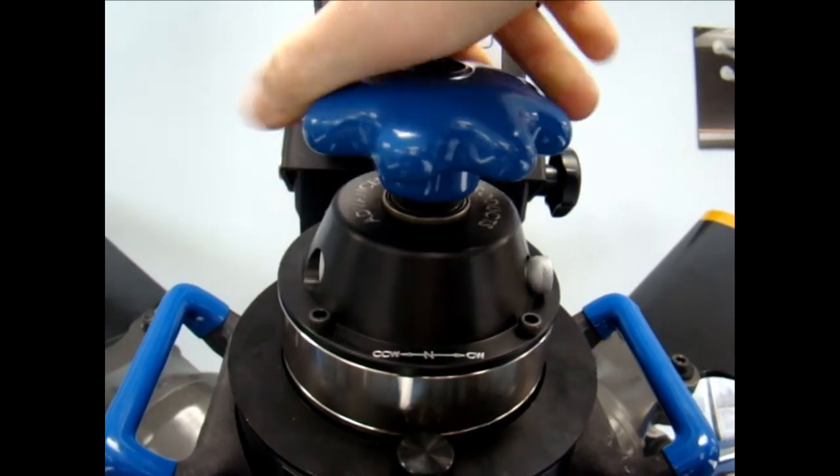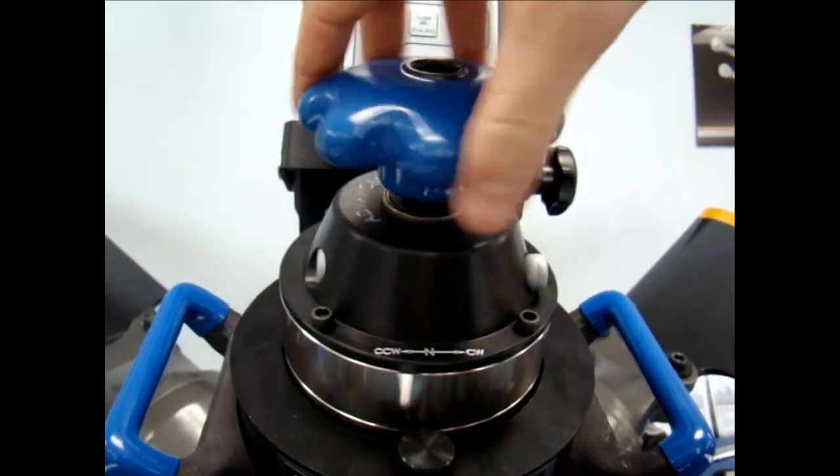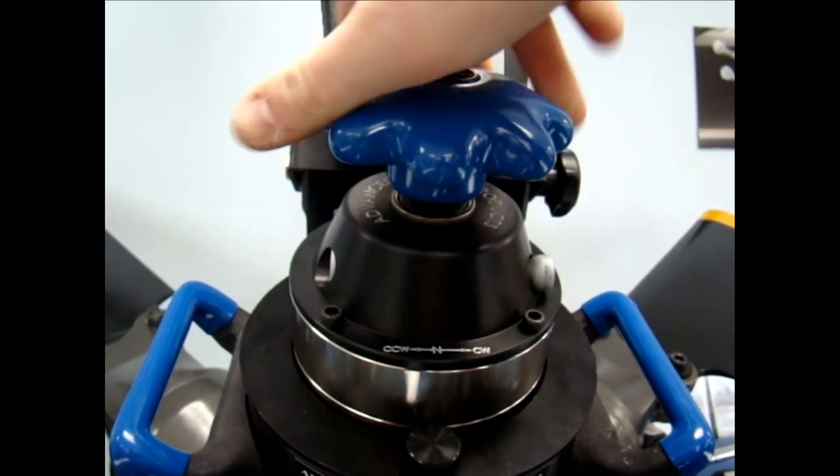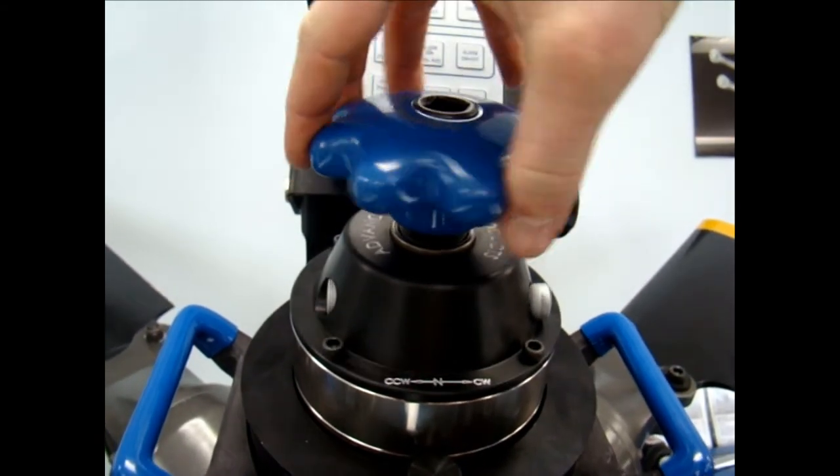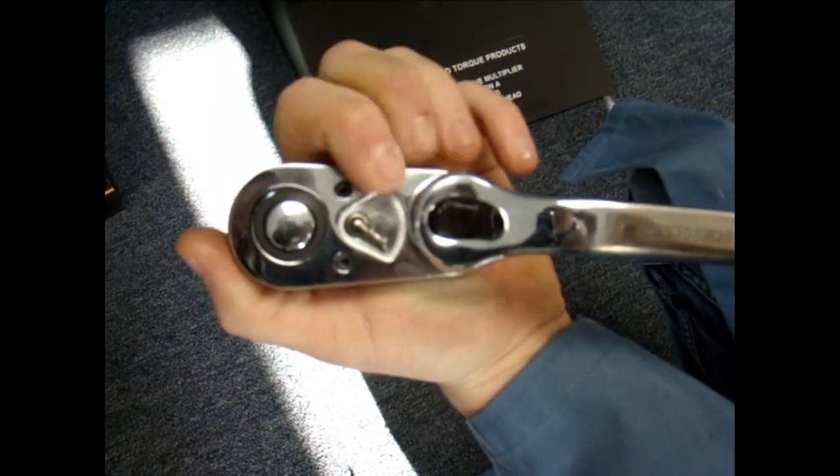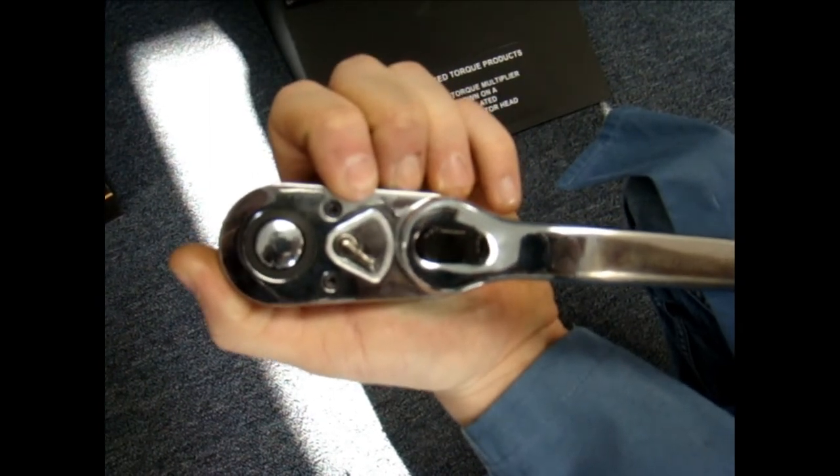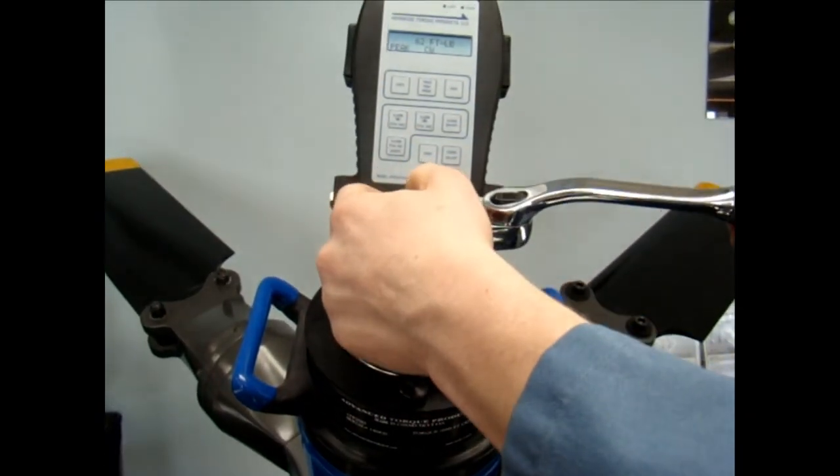The speed knob makes for easy turning during run-on and low forces, but as the forces become greater, a ratchet is then needed. When switching over to the ratchet, be sure the ratchet engages in the same direction as your multiplier, in this case the clockwise direction.